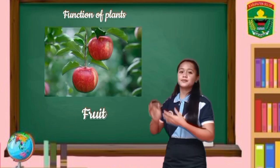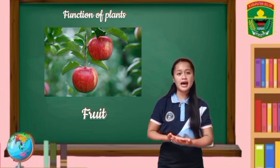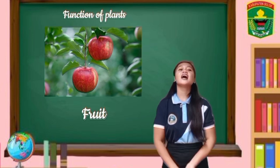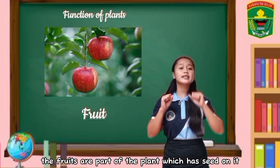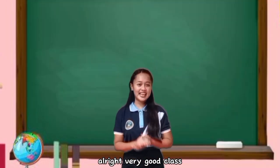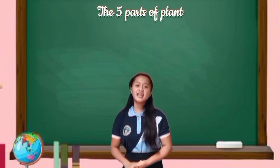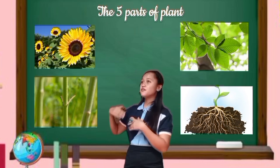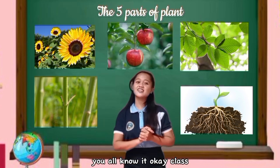Lastly, the fruit. Mirror me: the fruit is part of the plant which has seeds on it. Let's do it again: the fruit is part of the plant which has seeds on it. Very good, class! The five parts of plants are: the roots, the stem, the leaves, the flowers, and the fruits. Very good, class. You all know it.